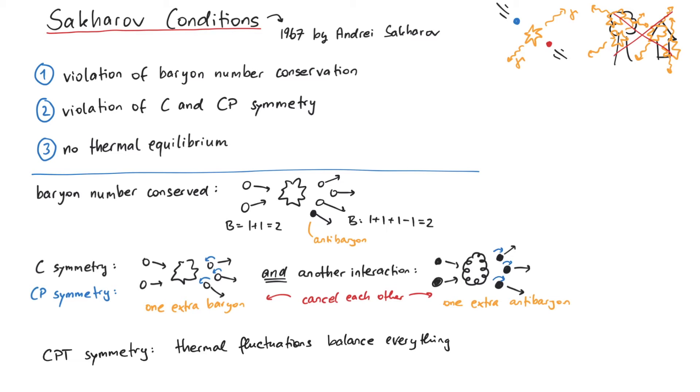Now that we got to know these conditions in more detail, what's the connection to our universe? Are they fulfilled? The answer is yes and no. Yes, they are fulfilled in the standard model of particle physics. We have an anomaly that breaks baryon number conservation. We have at least three generations of quarks, which leads to a CP-violating phase in the CKM matrix, and as our universe cools down after the Big Bang, it is out of thermal equilibrium.